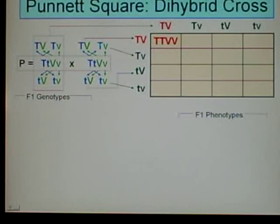So we combine the two Ts. We've got big T, big T, so we write those in, big V, big V, write those in. That square's done. We've got big T, big T, write those in, big V, little V, write those in. That square's done.